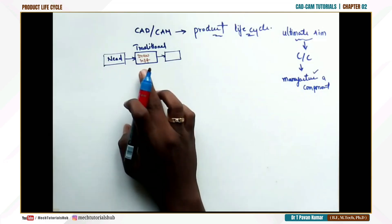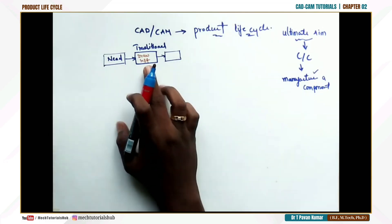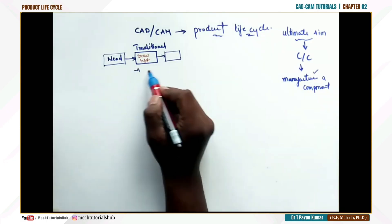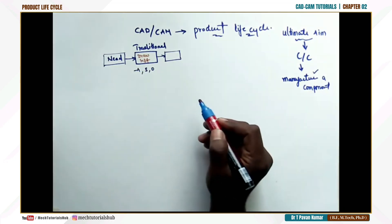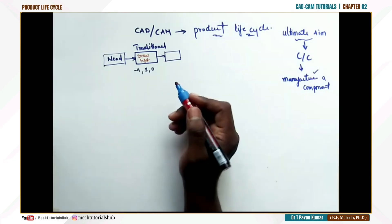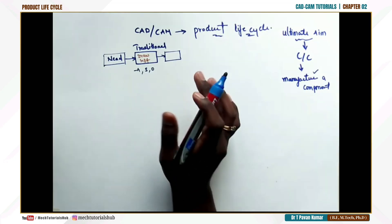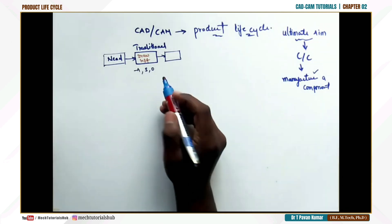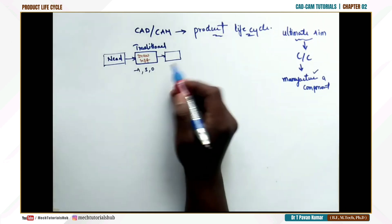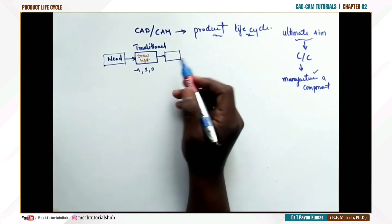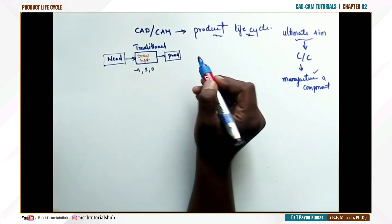Design analysis, optimization, or synthesis was never done properly in the traditional way. Analysis or synthesis of a product couldn't be done accurately. Estimation was not accurate — they used to work on drawings with assumptions. After drawing, they would go directly to production.